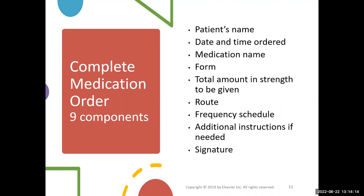And there has to be a signature. There's a digital signature when the prescriber logs in, puts in an order, and clicks save or submit. On a handwritten prescription, the prescriber has to sign it at the bottom. If it gets to the pharmacy and it's missing the patient's name, the date and time ordered, or anything else on this list — except usually form — it will not be accepted. The pharmacy will either give it back or call the provider to get clarification.